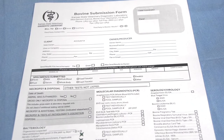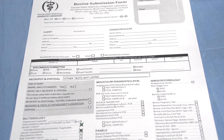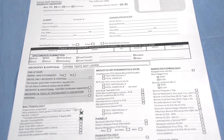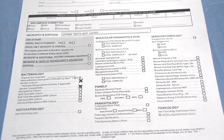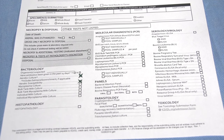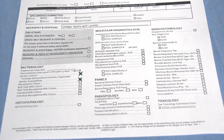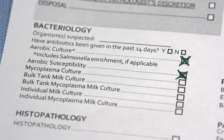It is important to mark the correct box on the bovine submission form. The requests for bacterial culture and antimicrobial susceptibility are located under bacteriology.